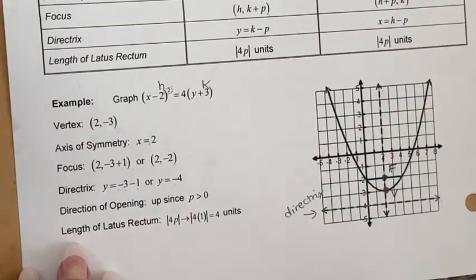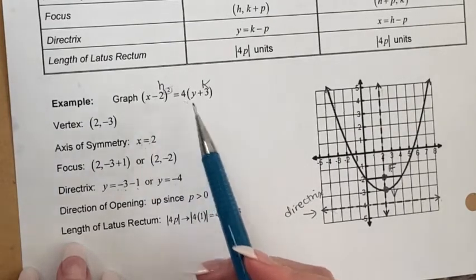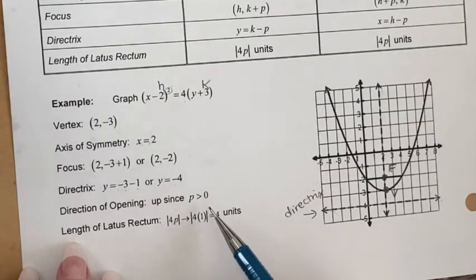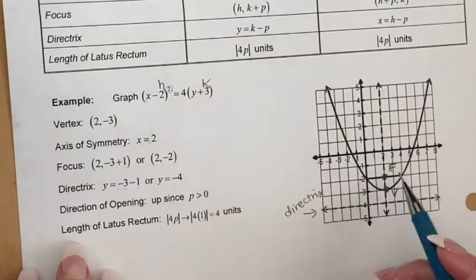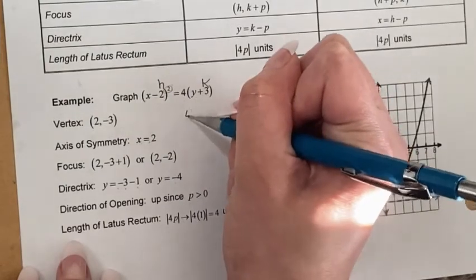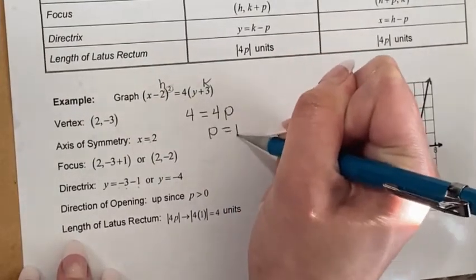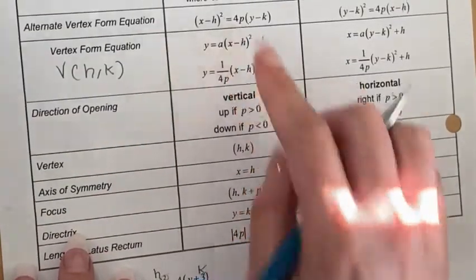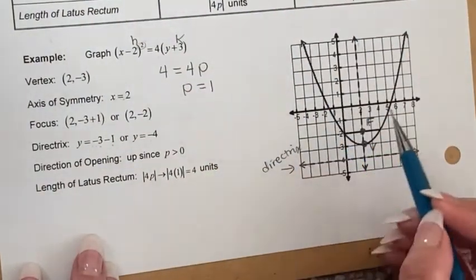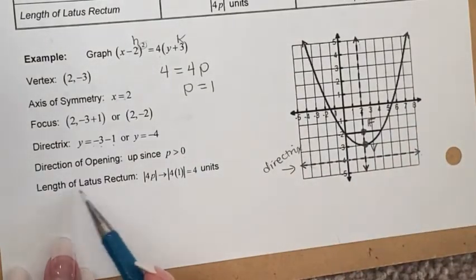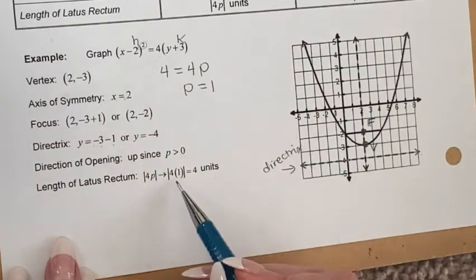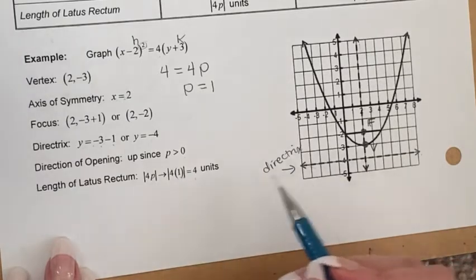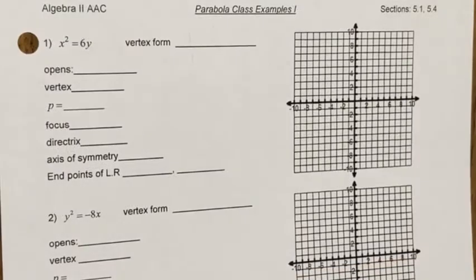The direction of opening: from the equation 4 = 4p, so p = 1, which is positive. Therefore the parabola opens up. The length of the latus rectum is |4p| = |4(1)| = 4 units. That's the complete analysis for this example.